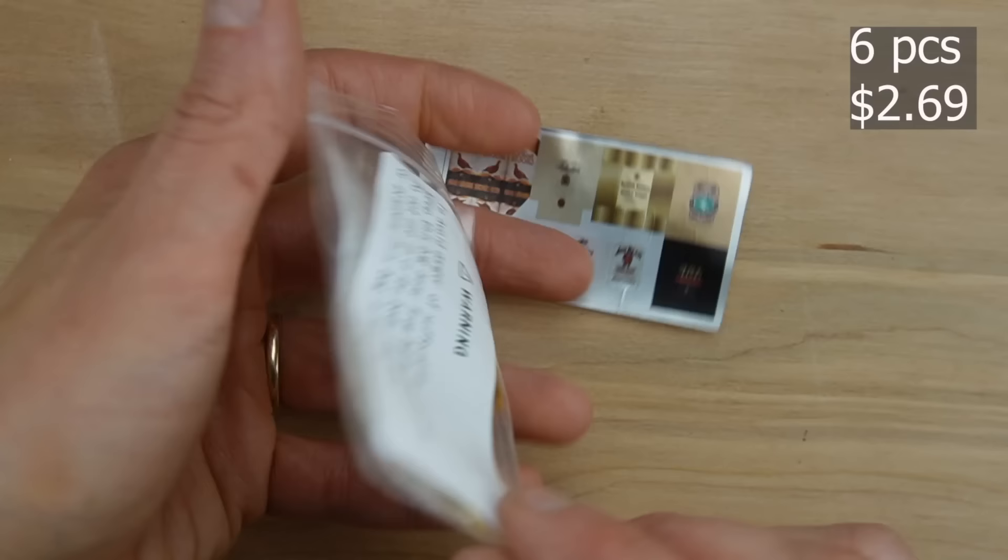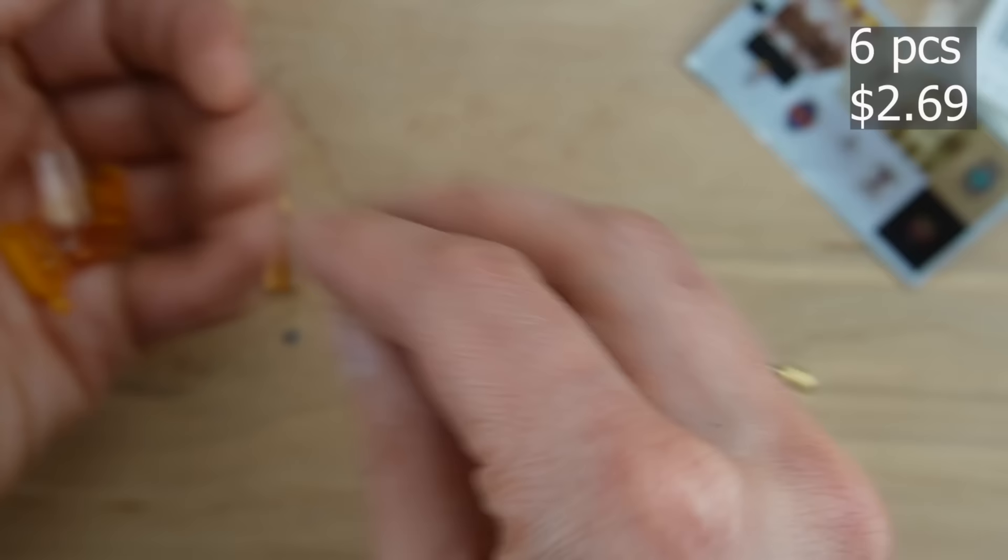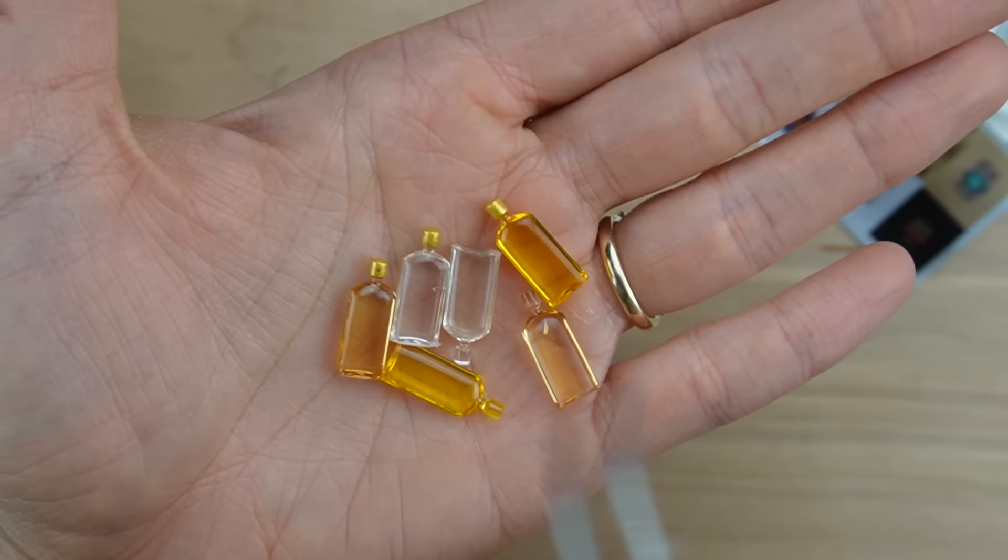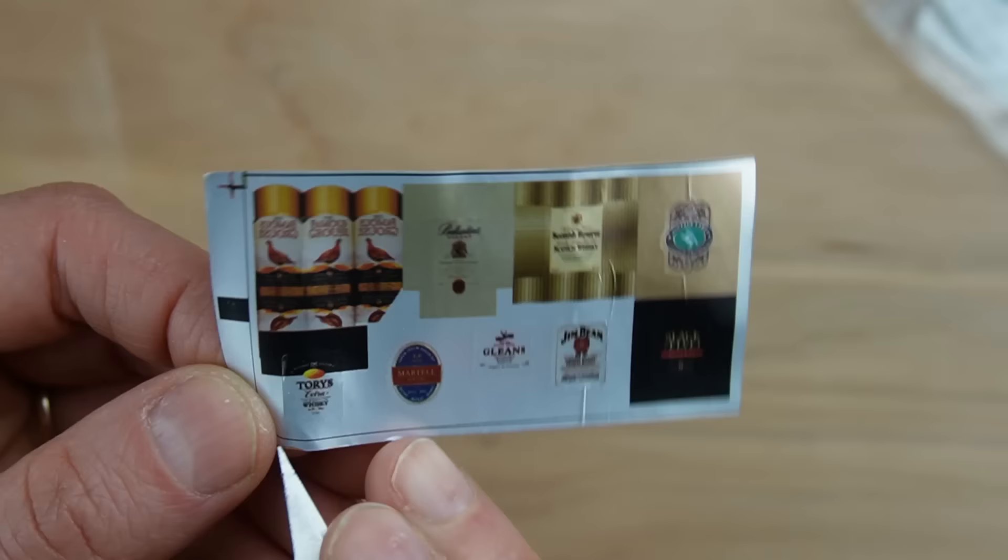I need some liquor for the little pub I'm making so I bought this kit that comes with these very thin metallic looking labels and six bottles. I like the shape and size of these bottles because they're 1-12 and I like the variation where you have some of them that have the gold cap and some of them are amber some are clear.